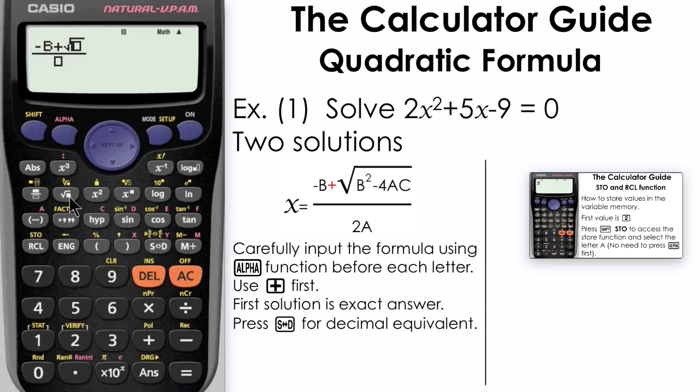Be careful to input this correctly using the ALPHA function before each letter. Once you've completed the top row, use your replay button to navigate down to the bottom to input 2A.